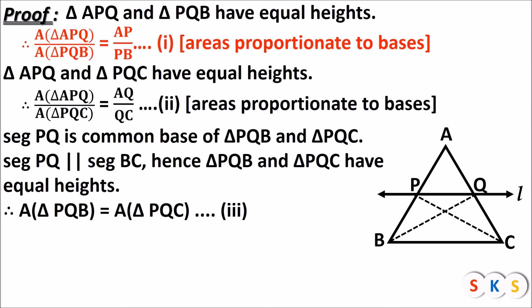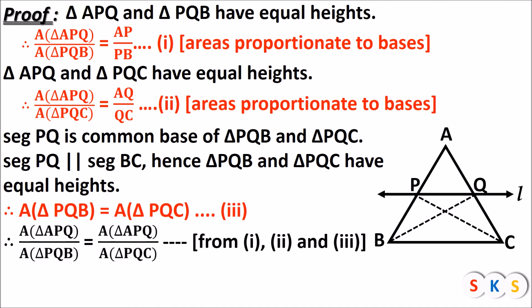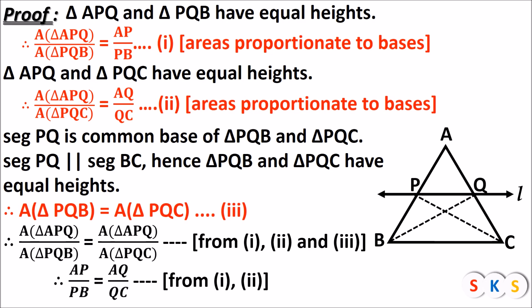From equations one, two, and three: in equations one and two the left-hand side numerators are the same — area of triangle APQ — but the denominators are area of triangle PQB and area of triangle PQC respectively. Since those denominators are equal by equation three, it follows that area of triangle APQ upon area of triangle PQB equals area of triangle APQ upon area of triangle PQC. Therefore AP upon PB equals AQ upon QC. Hence proved: when you draw a line parallel to any one side of a triangle, it divides the remaining two sides in the same proportion.